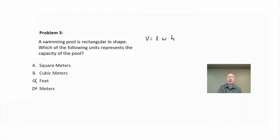Square meters would be area, two dimensions. So I'm going to eliminate square meters. The correct answer here would be the volume being measured in cubic meters. So the capacity would be in cubic meters.